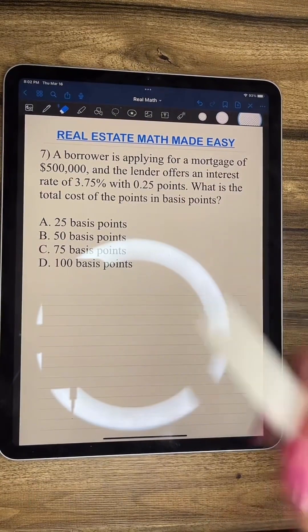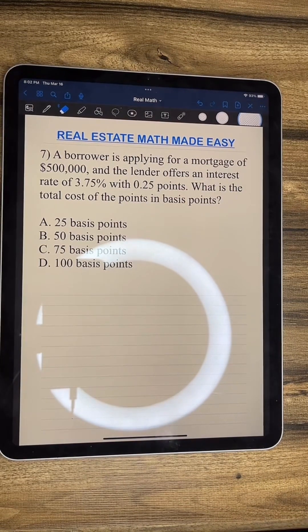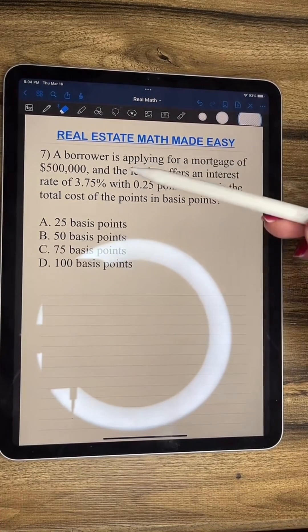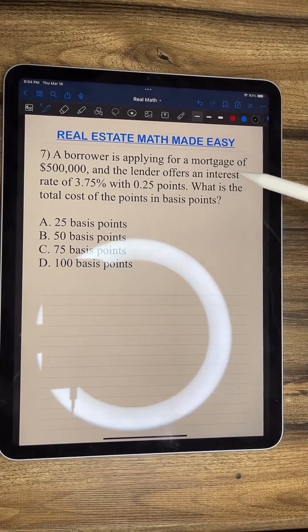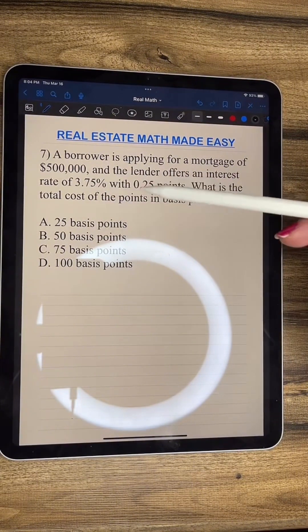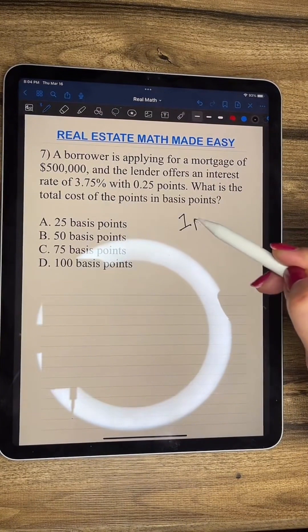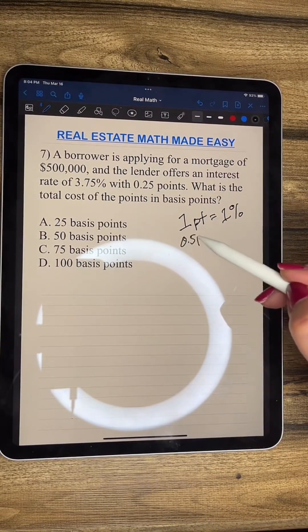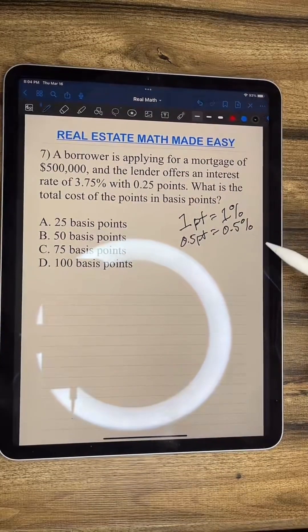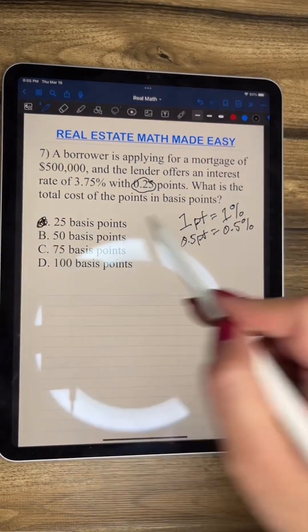I wanted to leave you guys off with this one. It looks very complicated, but it's actually a very easy problem. And you most likely will see something like this on the state exam. Because they do like to make it seem like it's a lot harder. It says a borrower is applying for a mortgage of $500,000. And the lender offers an interest rate of 3.75% with 0.25 points. What is the total cost of the points in basis points? One point is 1%. And 0.5 points is 0.5%. So what do you think this is going to be? Yes, absolutely. A, 25 basis points.